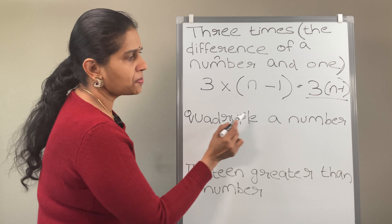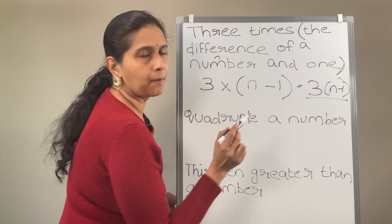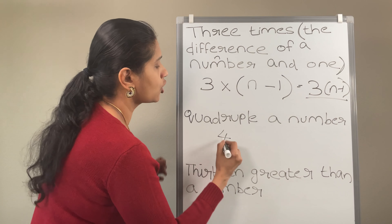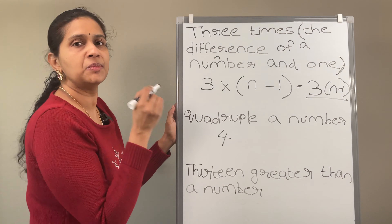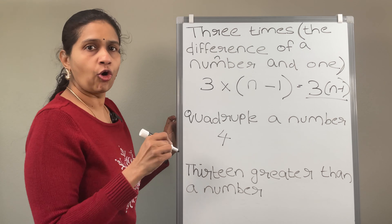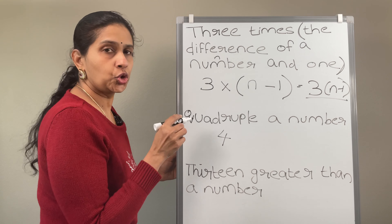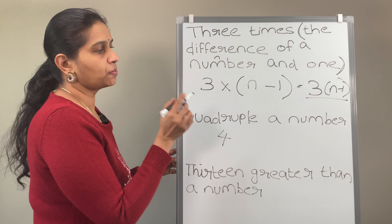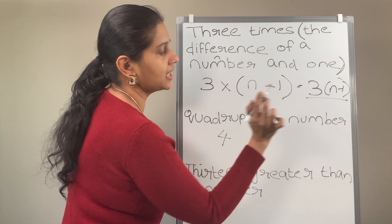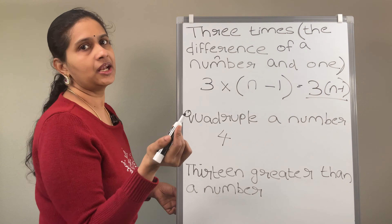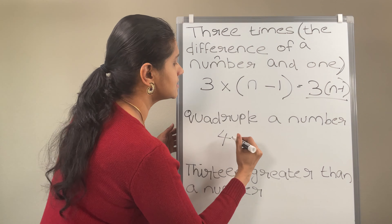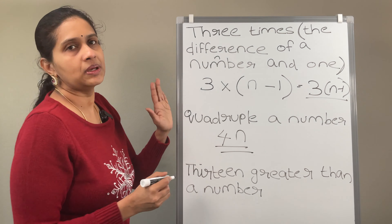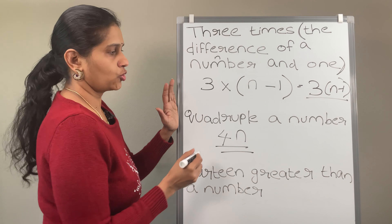Now next: quadruple a number. Quadruple means 4 times. Twice means 2, thrice means 3, so quadruple means 4. 4 times a number — consider n as the number. So quadruple a number means 4n is going to be the answer for this.